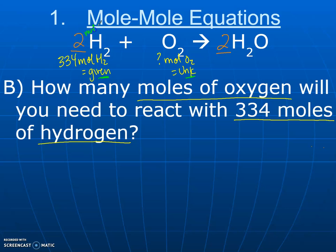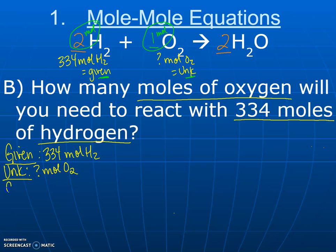We have two moles of H2 for every one implied mole of O2. So again, let's write that down below. Given, we have 334 moles of H2. My unknown is going to be moles of oxygen. My conversion factor is the reaction ratio: two moles of H2 for every one mole of O2. And then we're going to solve it.